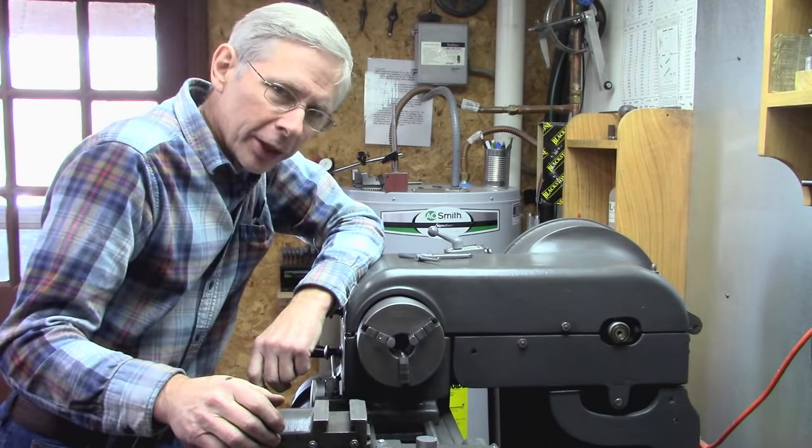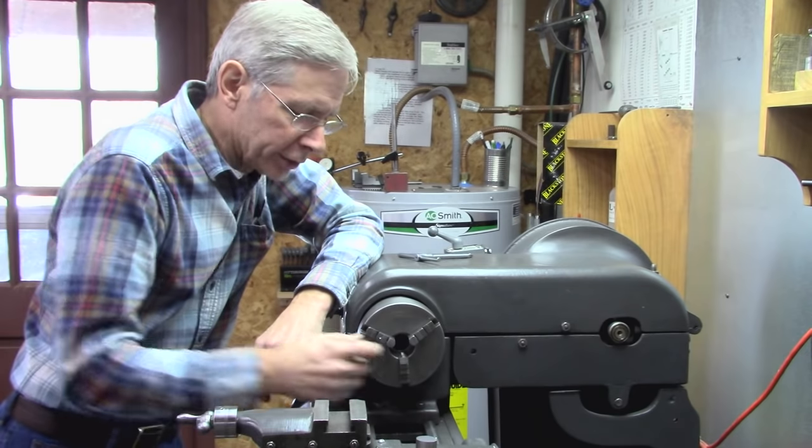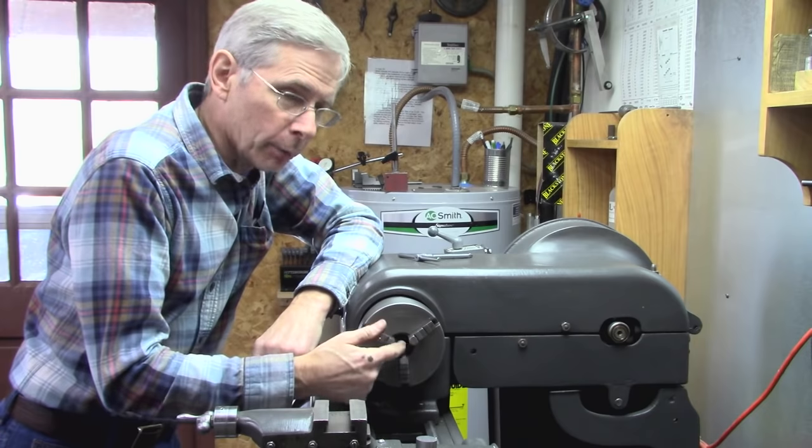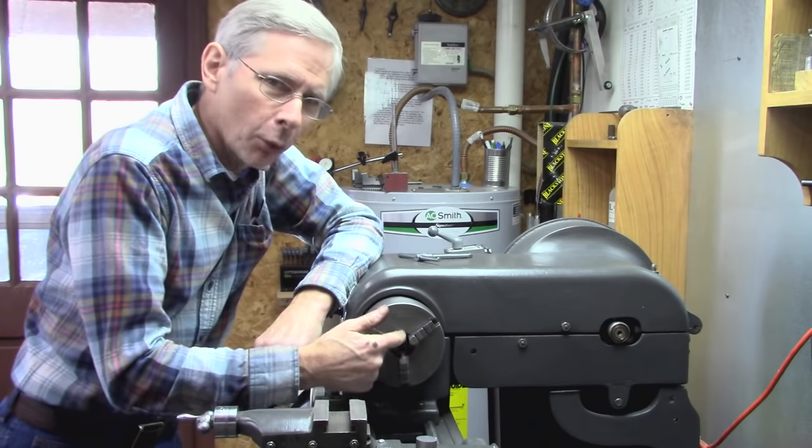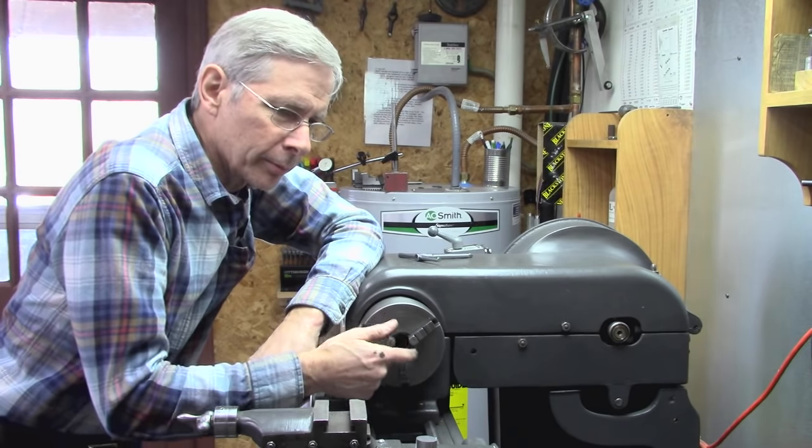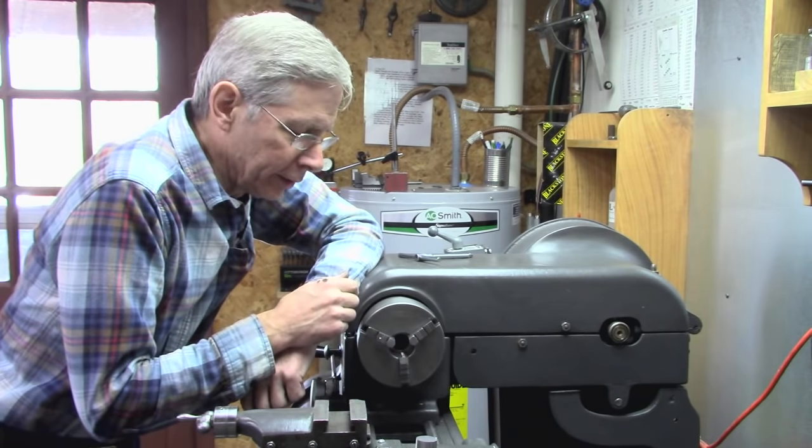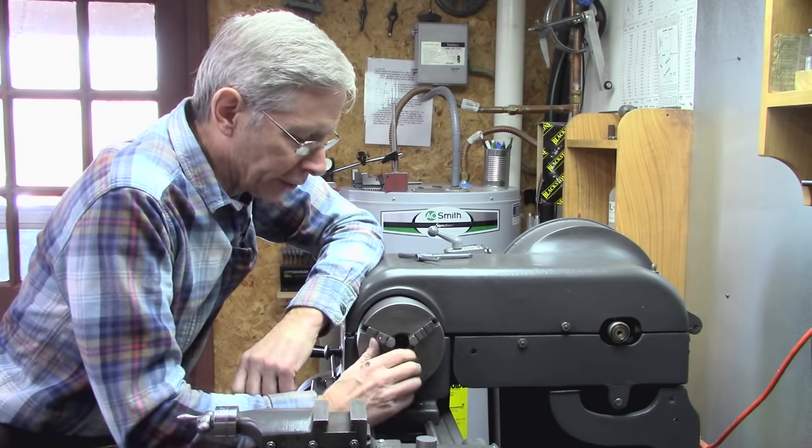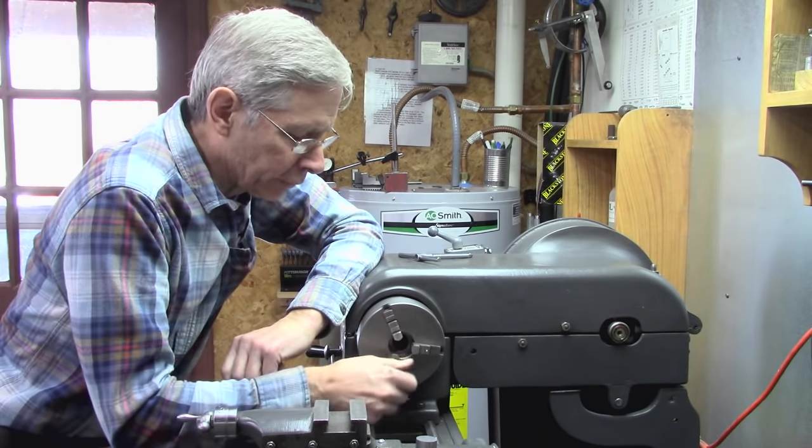It's got about 20 thousandths wear on the jaws. Some of it might be the scroll, some of it probably is the scroll, so it depends on what diameter I clamp in there, how much runout it's got. It's got about 15 thousandths runout, and to me it's kind of annoying. I'm going to see if I can improve that.